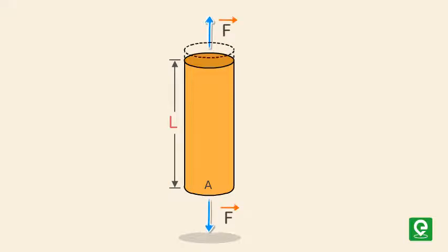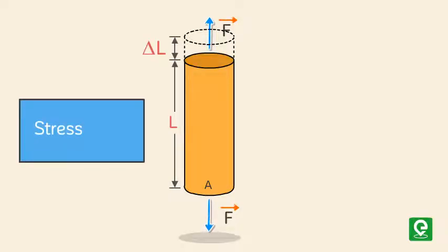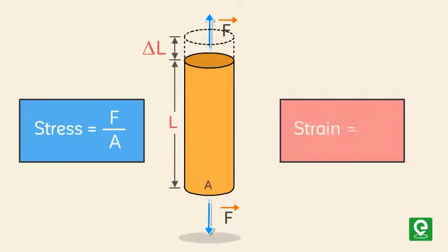Here the stress acting on the rod is equal to force applied divided by cross-sectional area. Strain is the measure of the deformation of an object under stress. Strain is defined as the fractional change of the object's length when the object experiences stress.